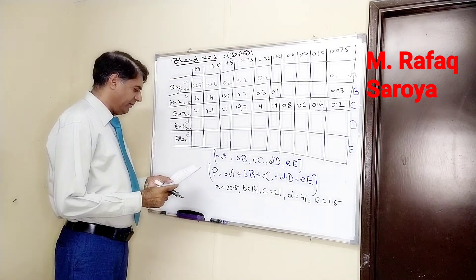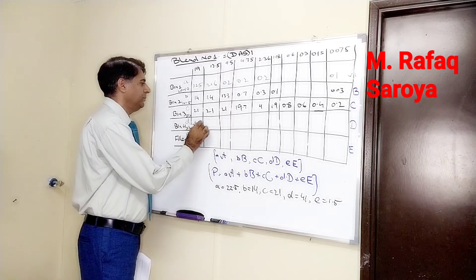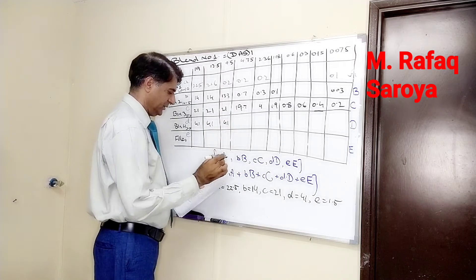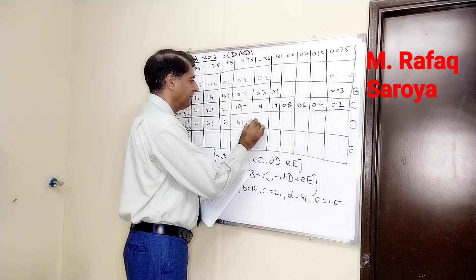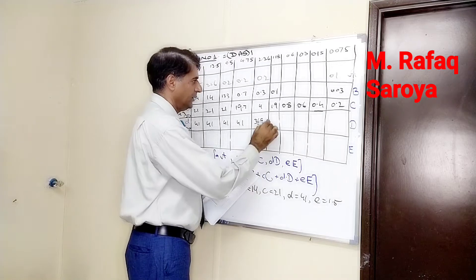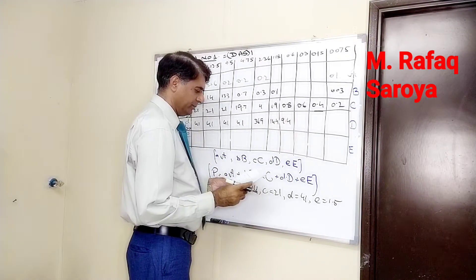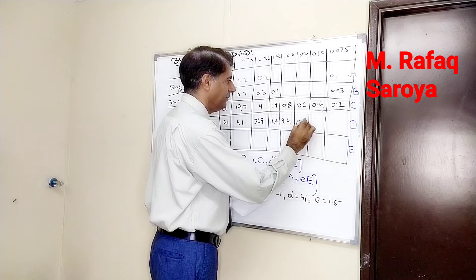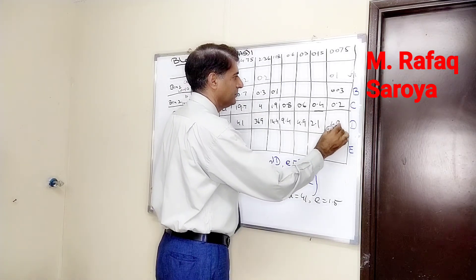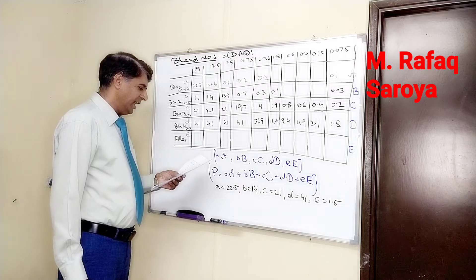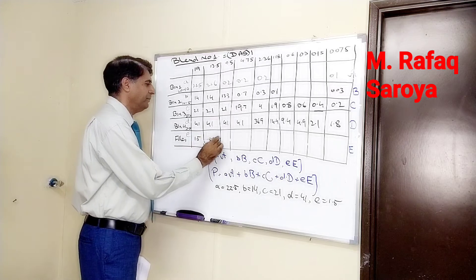Then bin number 3, and after that bin number 4: 41, 41, 41, 41, 36.9, 14.4, 9.4, 4.9, 2.1, and 1.8. Next, about this filler — because it is 1.5%: 1.5, 1.5, 1.5.